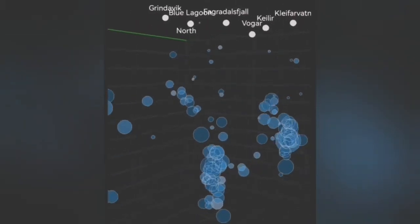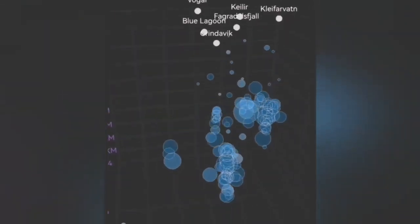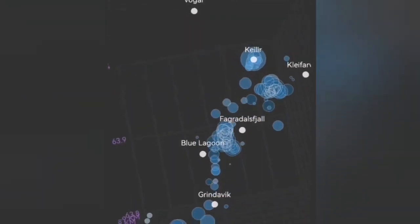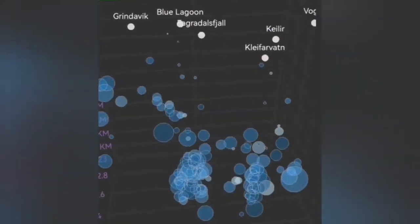You can see at the center the vertical beam of circles rising to the sky. Then from above, you can see that it is moving toward Grindavik.